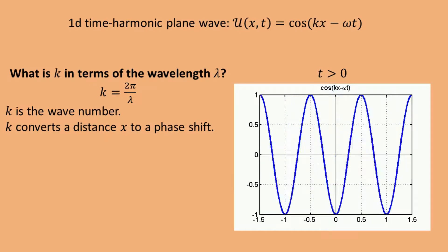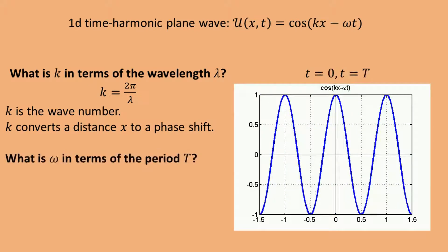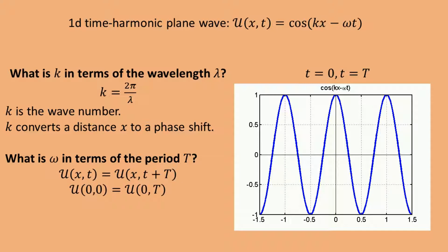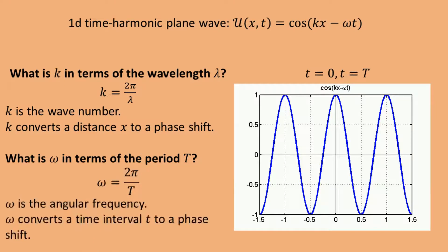The wave is also periodic in time, meaning that if we wait for a period of time T, we end up with the same situation. So the next question we can ask is: how are omega and the period T related? The reasoning is again the same. For any time t, the field should be the same at time t + T for any position x. In particular, it should be the same for x = 0 and t = 0, which leads to the equation 1 = cosine(ω·T), and the smallest solution larger than zero is given by ω = 2π/T. Omega is called the angular frequency, and just like k converts distance to phase, omega converts time intervals to phase. Multiplying omega by a time interval ΔT checks how many periods T fit in ΔT, and each period corresponds to a phase shift of 2π, meaning that the wave at any fixed point x has gone through one oscillation.